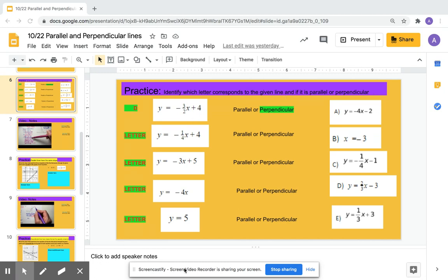So this first example here, I looked at y equals negative 3 over 2x plus 4. So in order to identify if the line's parallel or perpendicular,